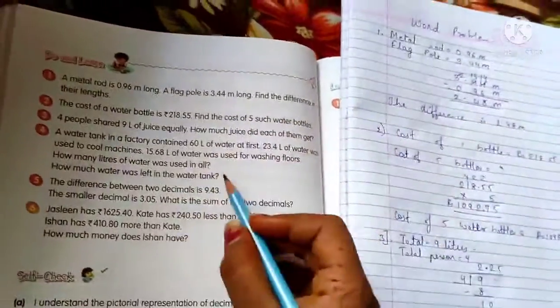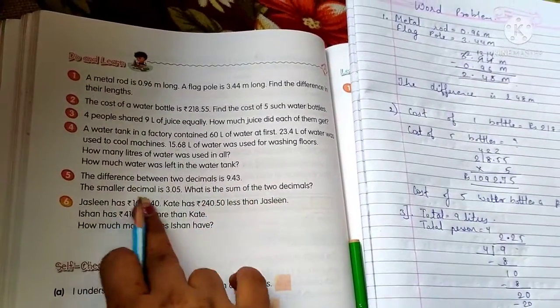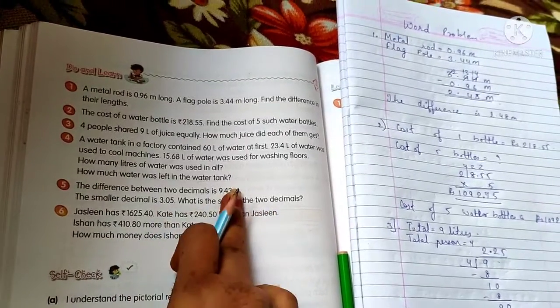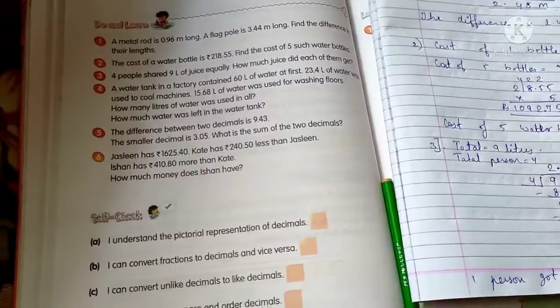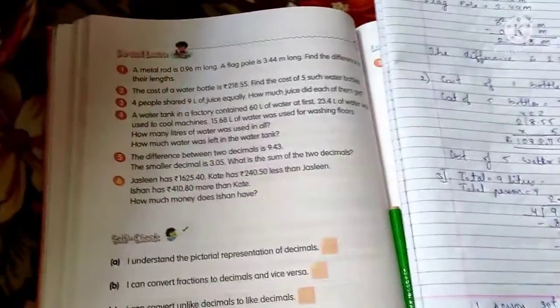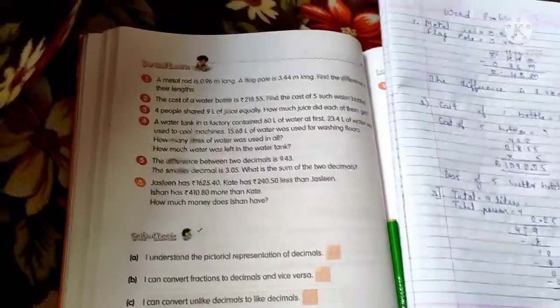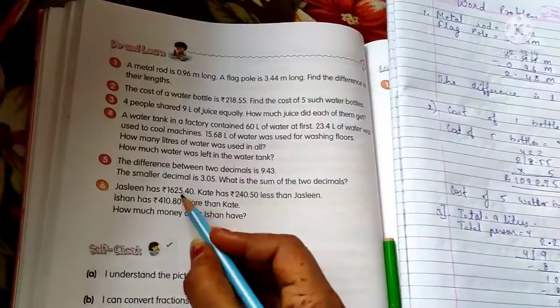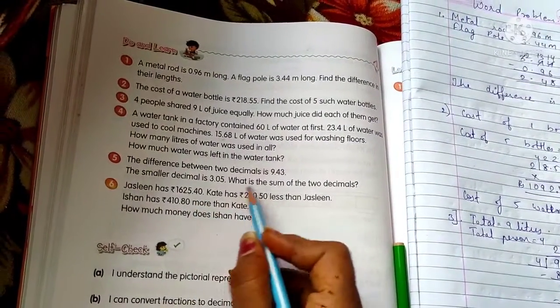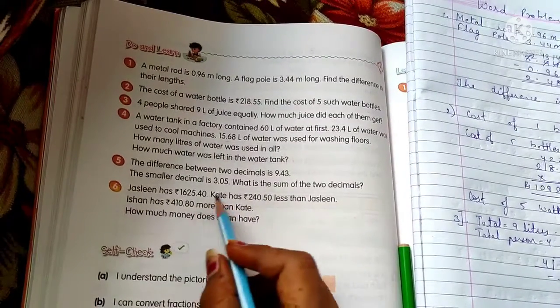Here difference between two decimals is 9.46. The smaller decimal is 3.05. Juseline has Rs. 1625.40. Kate has Rs. 240.50 less than Juseline. And Ishan has 410.80 more than Kate. So first we will get the answer for Kate, and then we will add this to get the answer for Ishan. So these are the word problems. You have to solve it by yourself. 4th, 5th and 6th is the homework and 1st, 2nd, 3rd is here.